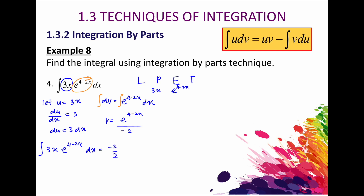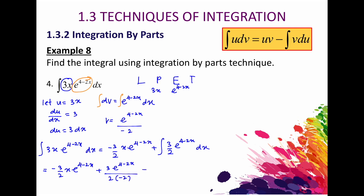Plus the integral of 3 over 2 times e^(4−2x) dx. Integrating that gives 3 times e^(4−2x) over 2 times negative 2, plus C. Rearranging, the final answer is negative 3 over 4 times e^(4−2x) times (2x minus 1), plus C.